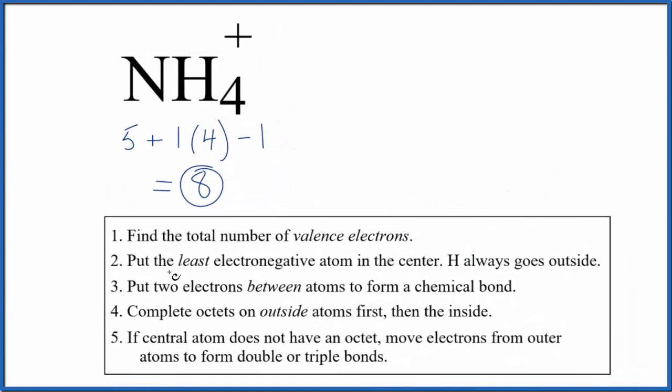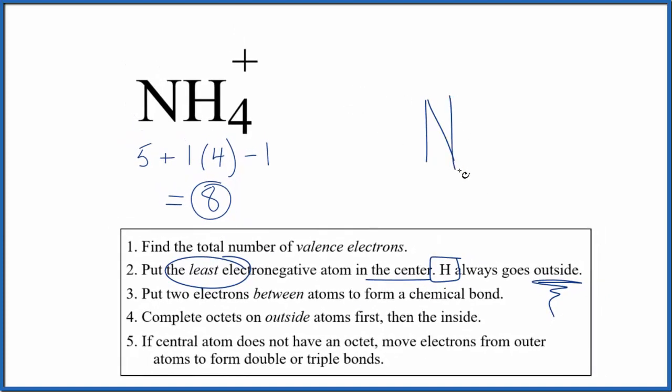So we'll put the least electronegative element in the center. But hydrogen, that always goes on the outside. So we'll put our nitrogen and then 4 hydrogens around it.